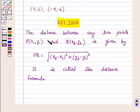We know that the distance between any two points P(x1,y1) and Q(x2,y2) is given by PQ = √[(x2-x1)² + (y2-y1)²]. It is called the distance formula.